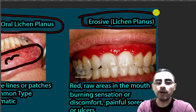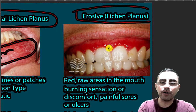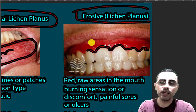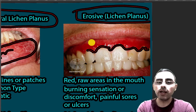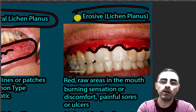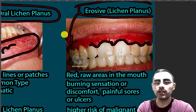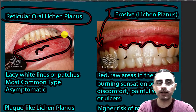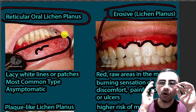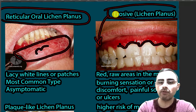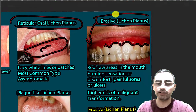Another type is erosive lichen planus, which is characterized by red raw areas. You can see how red and raw it looks in the mouth — burning sensation, discomfort, painful sores, and ulcers. This erosive form is more commonly associated with malignant transformation. While lichen planus generally has a low rate of malignant transformation, the erosive form has a higher rate, which is why we should pay attention to it.